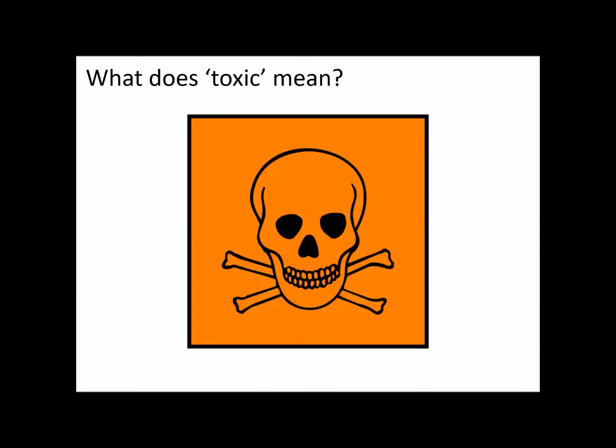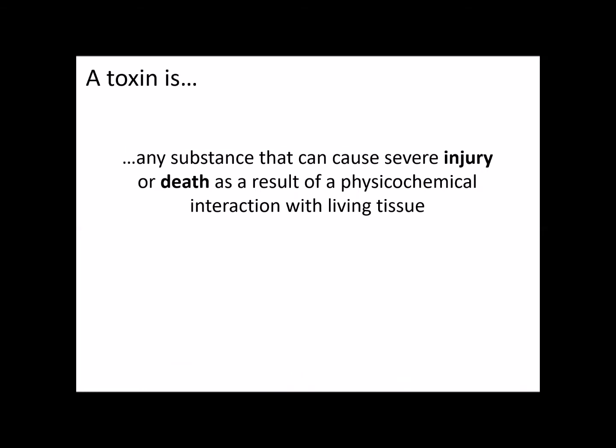We'll start with looking at what do we mean by toxic. You see that skull and crossbones symbol on something and you immediately think of toxic as being something that's going to kill you. But actually a toxin is any substance that can cause severe injury or death as a result of physico-chemical interaction with living tissue. Toxicology is really about chemicals that can cause harm in any way to a living organism or to an environment.